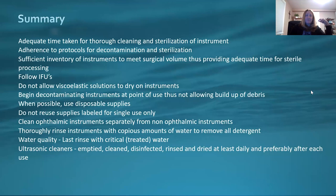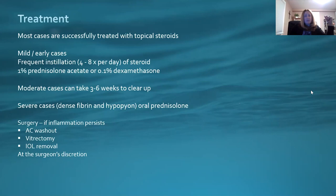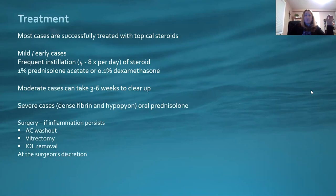Treatment for TASS: Most cases are very successfully treated with topical steroids. For mild and early cases, four to eight times a day of a steroid — typically 1% prednisolone or 0.1 dexamethasone — are usually standard. Moderate cases can take three to six weeks to clear up. For severe cases with dense fibrin and hypopyon, you'll usually use oral prednisone. Surgery is also an option — if inflammation persists, you may do an anterior chamber washout, vitrectomy, or remove the IOL. Most cases are successfully treated with topical prednisolone or dexamethasone.